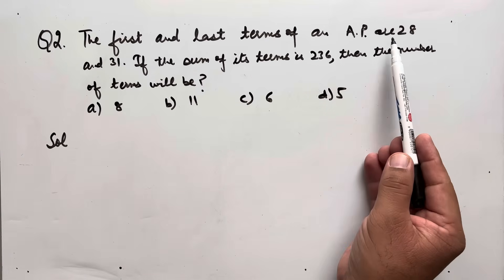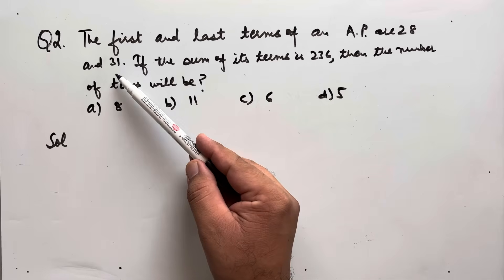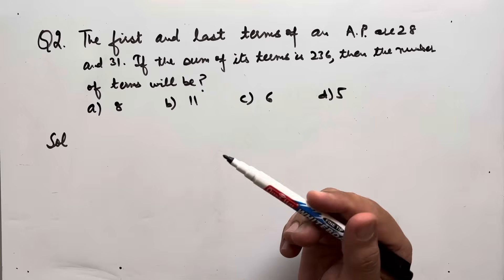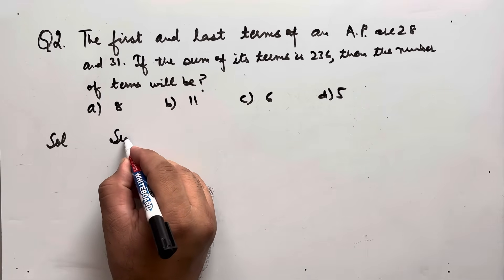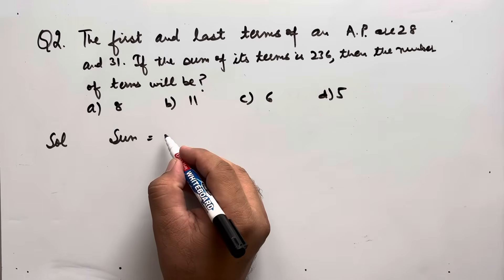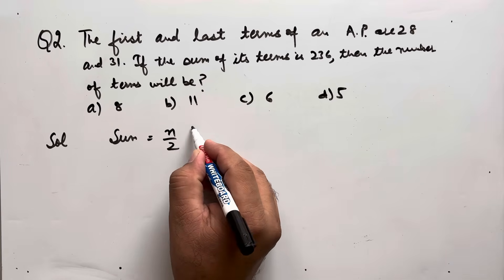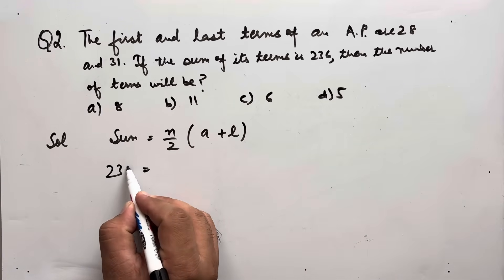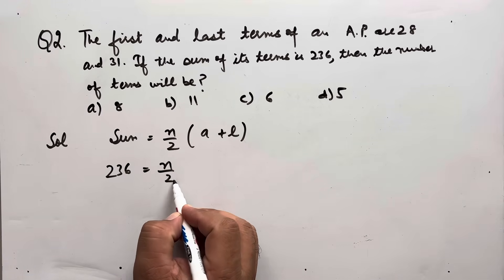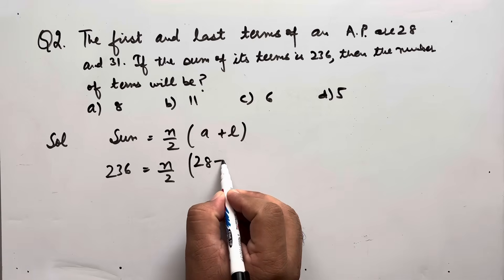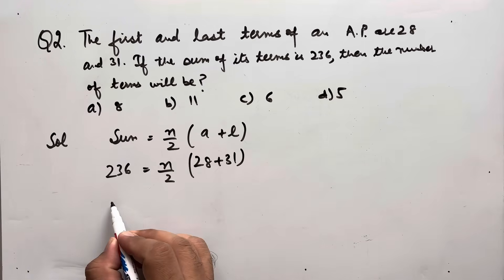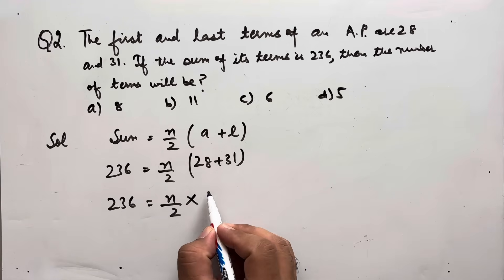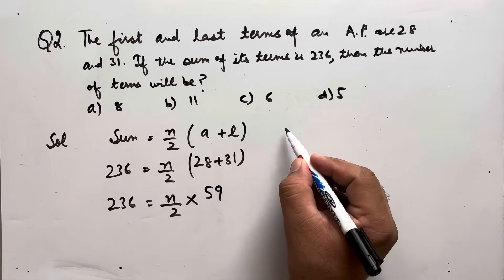Question number 2: the first and last term of an AP are 28 and 31. If the sum of its terms is 236, find the number of terms. We know the sum formula when first and last terms are given: S = n/2 × (first + last). So 236 = n/2 × (28 + 31) = n/2 × 59.